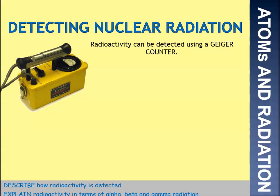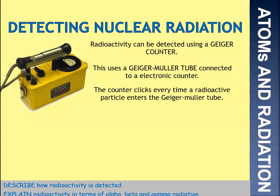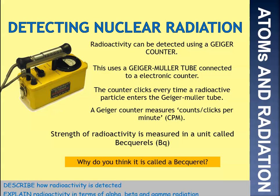In order to detect nuclear radiation, we use something called a Geiger counter. This uses a Geiger-Müller tube — the counter clicks every time a radioactive particle enters that tube, and the Geiger counter measures the counts or clicks per minute. The strength is measured in a unit called Becquerels — named after a scientist that did a lot of work on this.